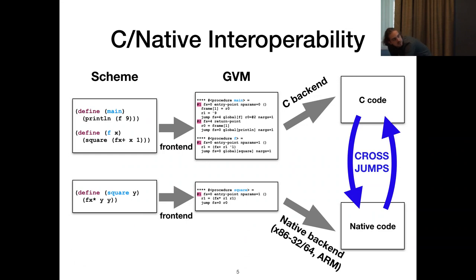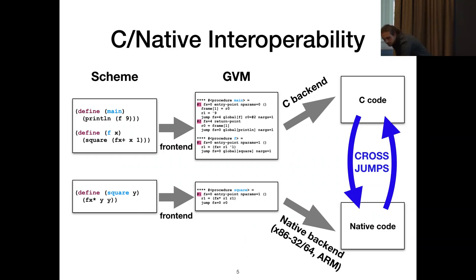We call these jumps between C code and native code cross-jumps. Before showing you how, I'll tell you a little bit about why.